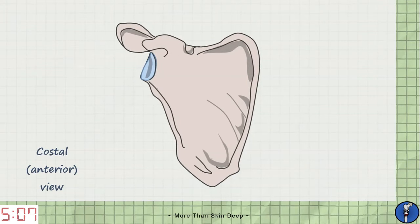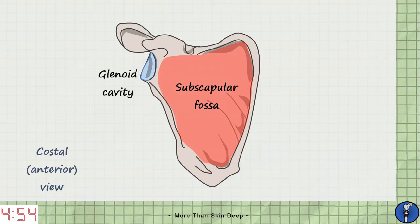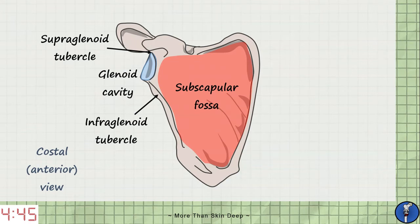This anterior view of the scapula is also known as the costal view as it's the side that's in contact with the ribs. The most obvious feature on this side is the large concave subscapular fossa. Then we have the shallow glenoid cavity which articulates with the humerus at the glenohumeral or shoulder joint. And above and below this we have the supraglenoid and infraglenoid tubercles.